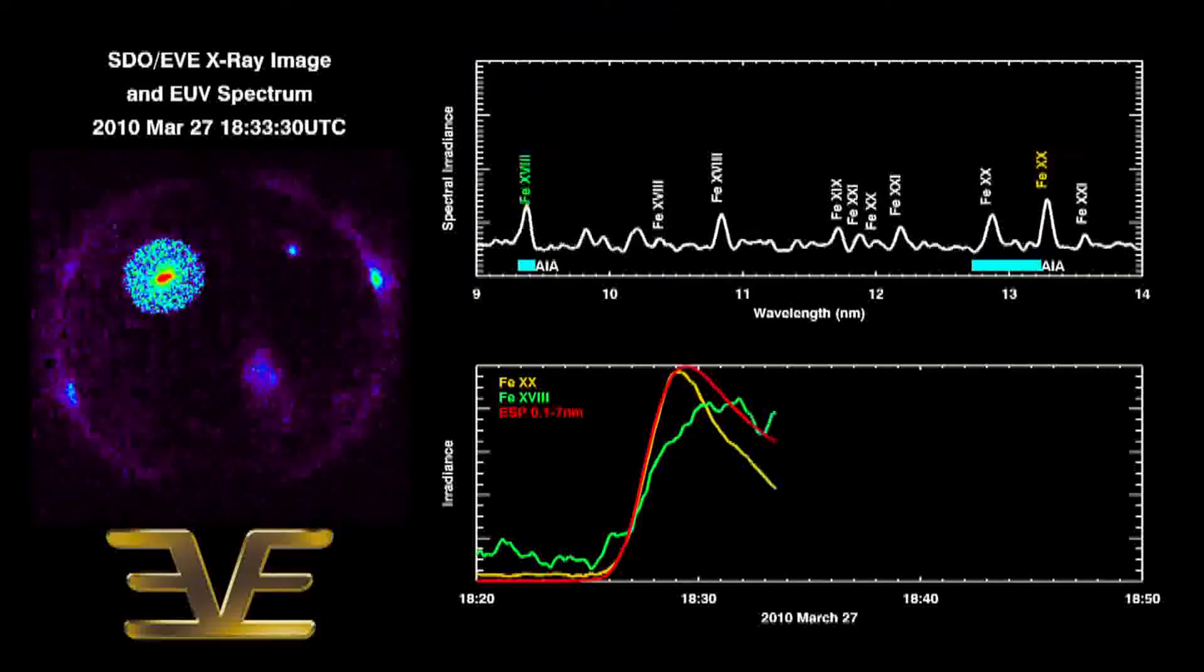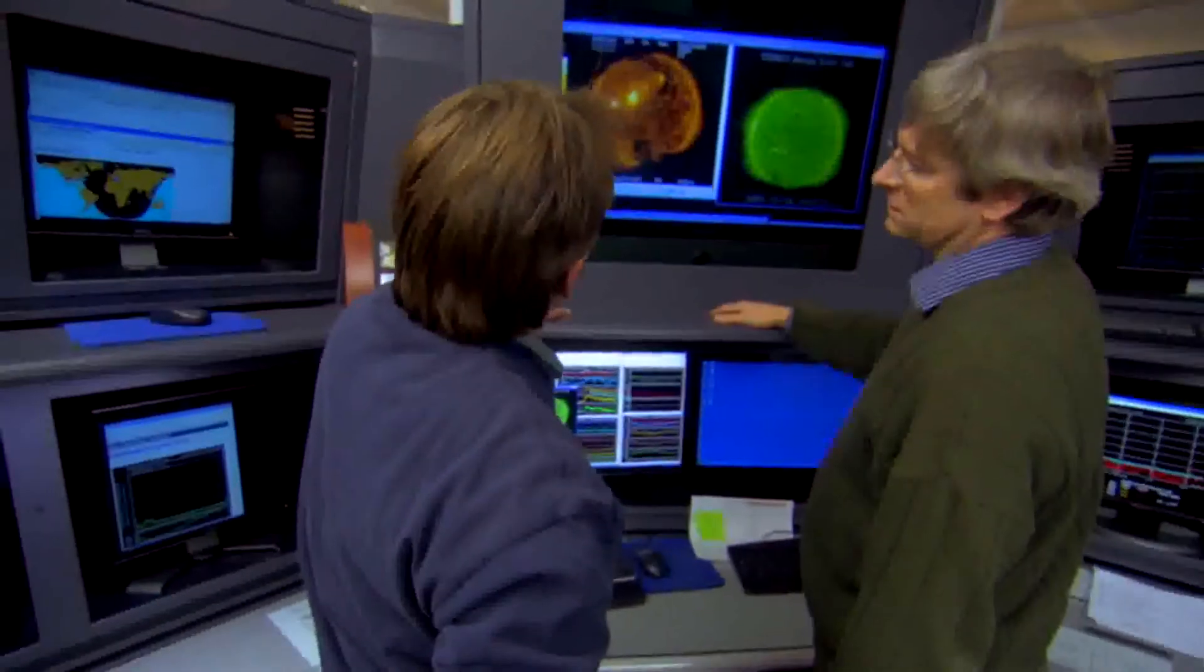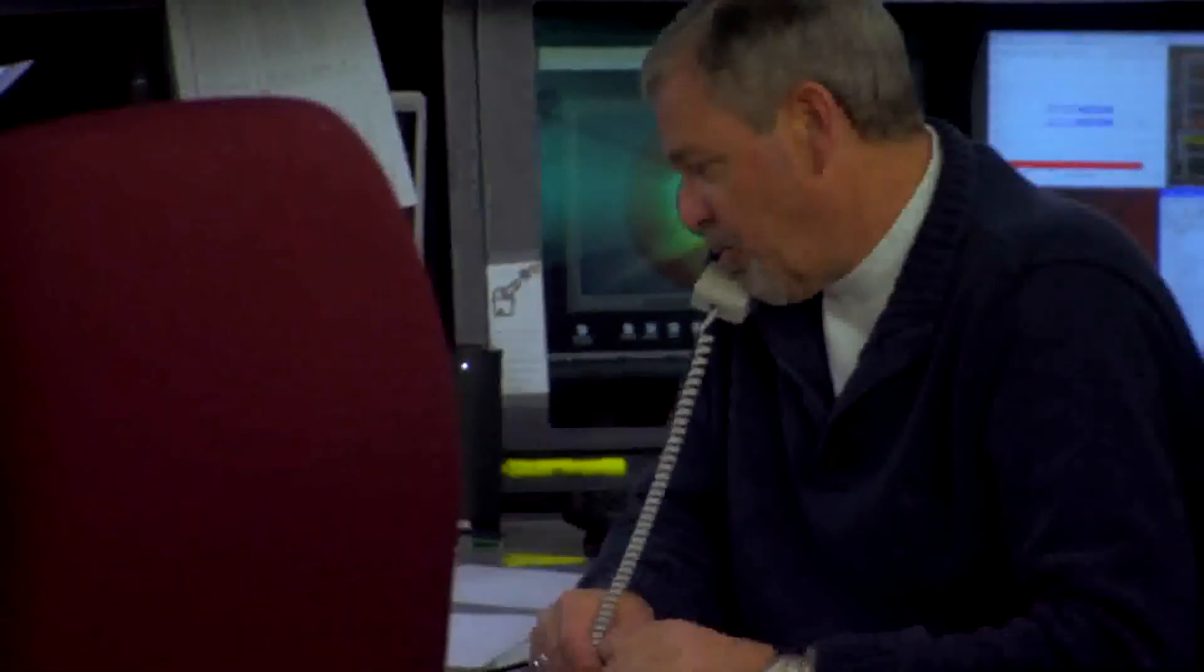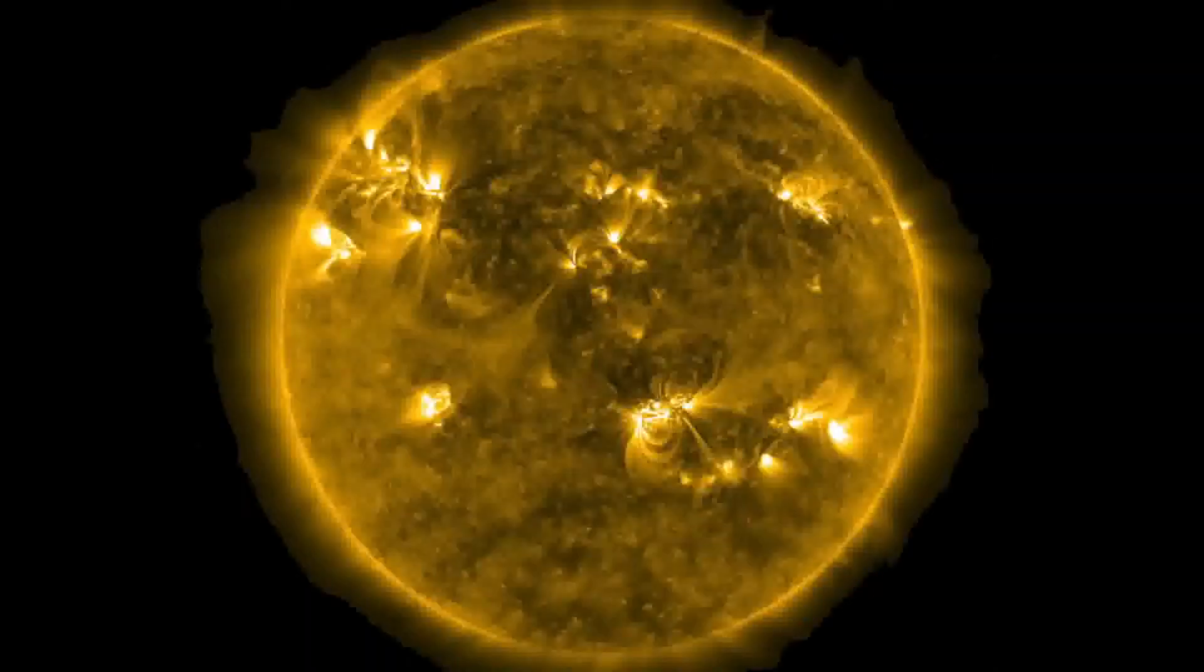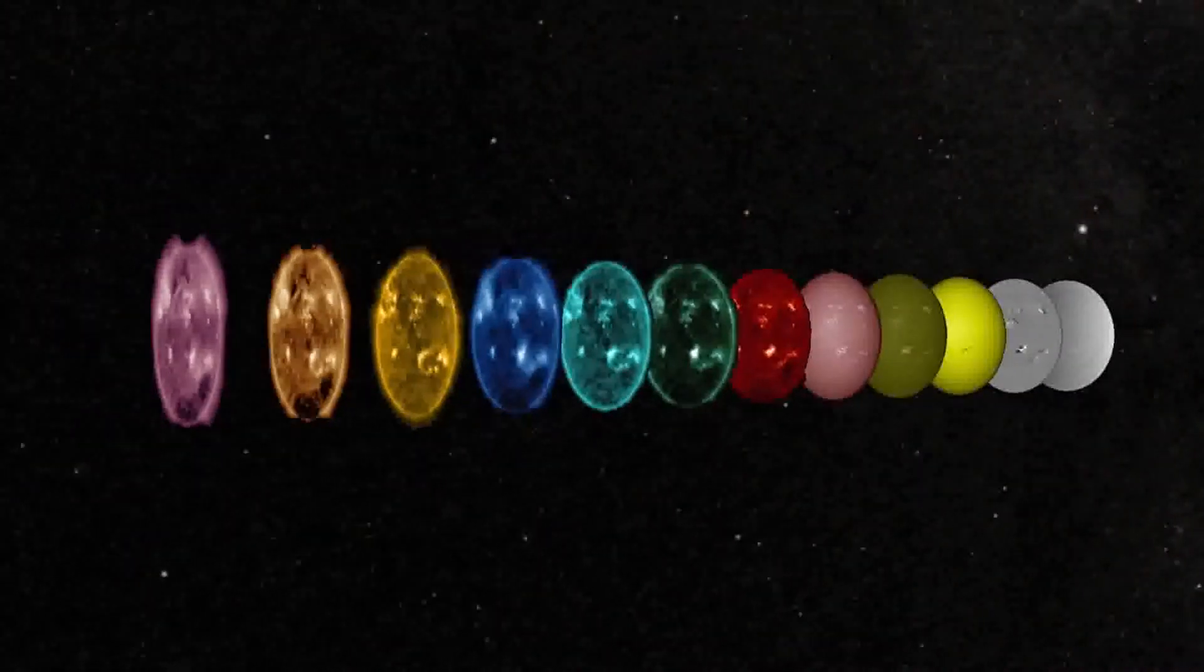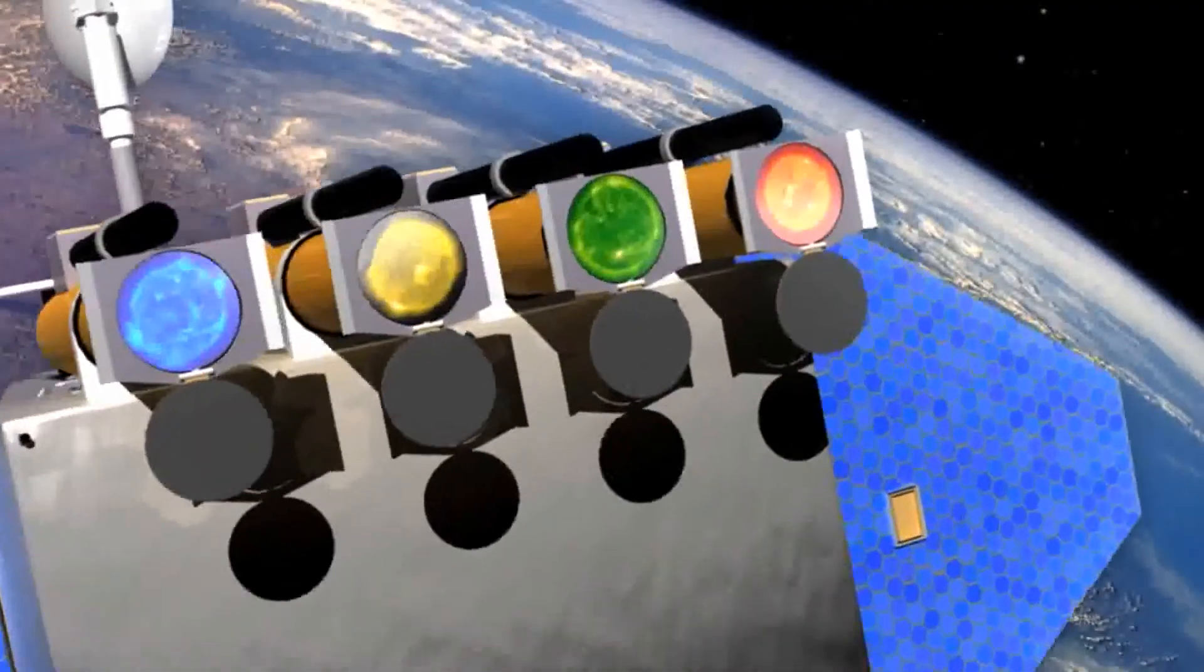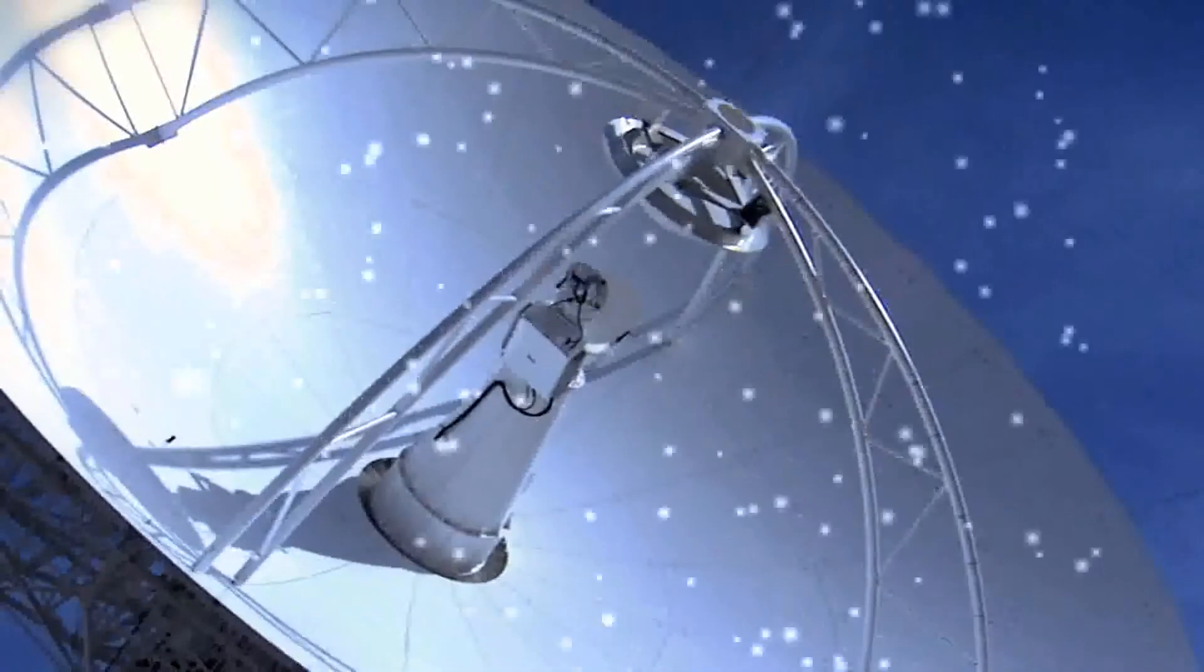The seriousness of an X-class flare pointed at Earth is why NASA and NOAA constantly monitor the sun. NASA's heliophysics fleet of spacecraft can now see the sun from every side and in many different wavelengths. This unprecedented coverage is enabling scientists to predict and detect space weather events like flares and CMEs with ever greater accuracy.